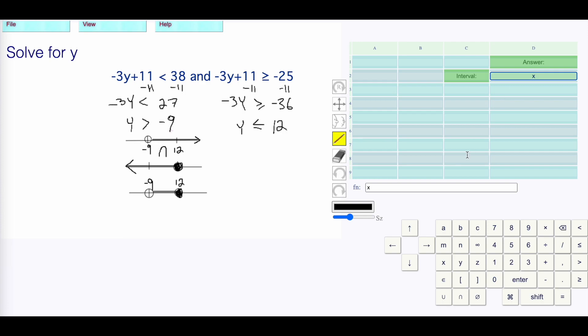You write that as an interval: y is a member of the space from -9, rejecto bracket on the -9, comma, up to 12, and the 12 is included, gets the accepto bracket. There's your answer, and you press enter to see if you're right.